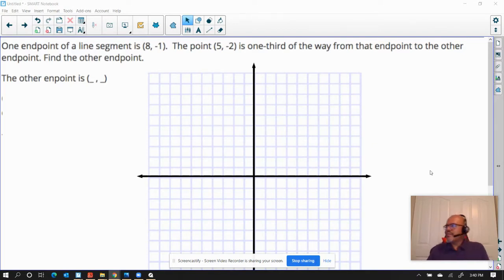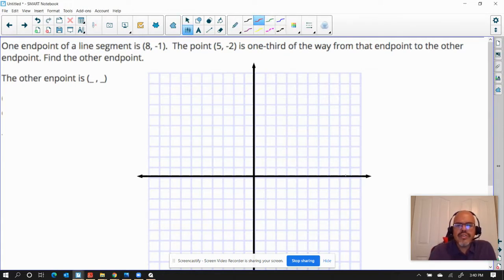Okay, so we had a question about this particular item here. This question has an endpoint of a line is at 8, negative 1.